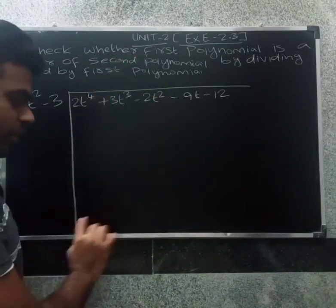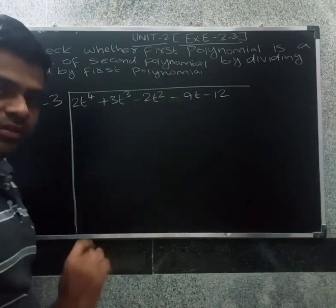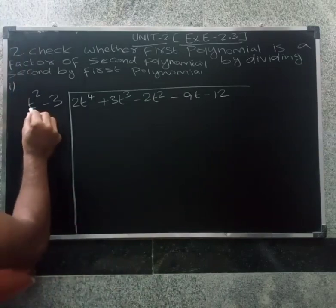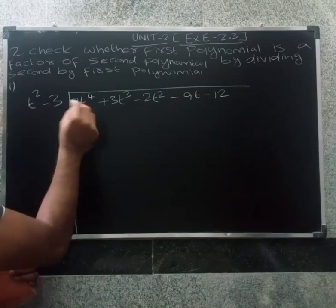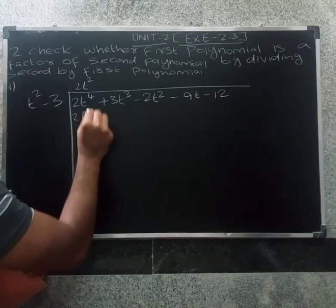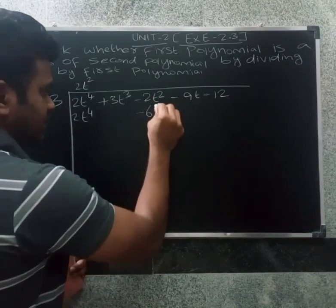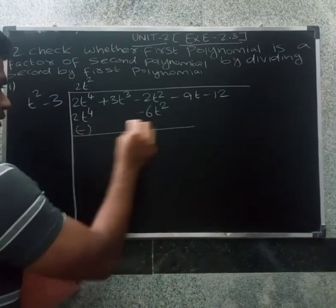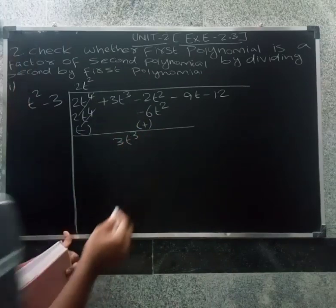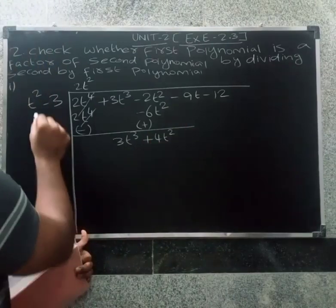Divide. So 2t⁴ by 4, multiplied by 2t⁴ by 4, multiplied by 2t⁴ by 4, minus 3 by 2, two one, minus six t squared — so this minus plus, cancel here. So three t cubed. Next is plus four t squared, so here t squared is three t cubed.